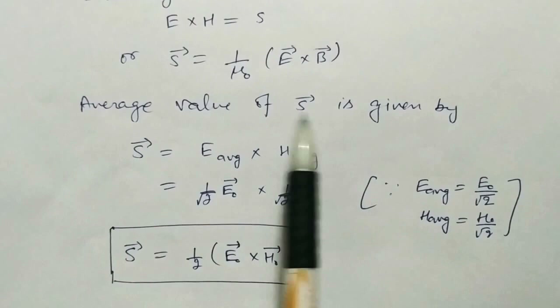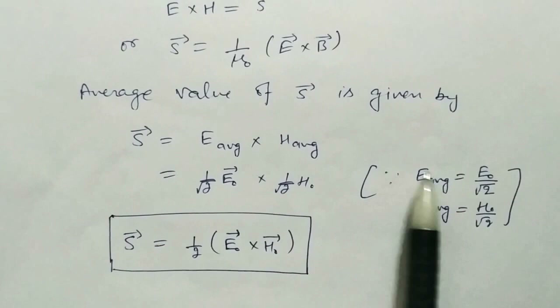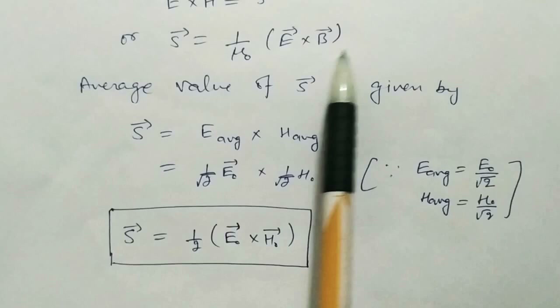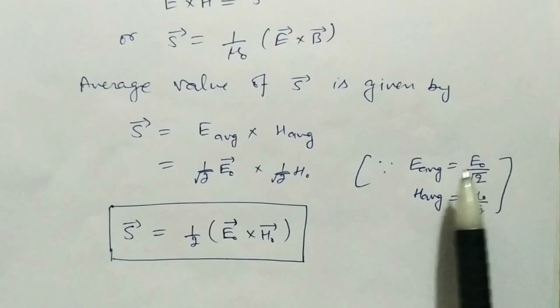Now talking about the average value of S: E is represented as E-naught sine omega T, and B is represented as B-naught sine omega T — both E and B are sine waves. The average value of E is E-naught by root 2 and the average value of H is H-naught by root 2. Putting both values in, S average equals 1 by 2 times E cross H.